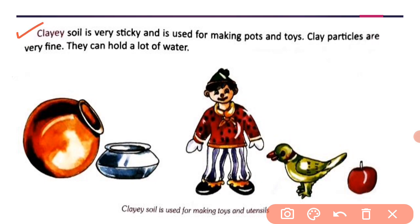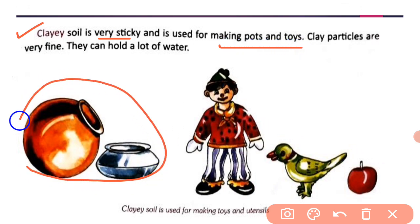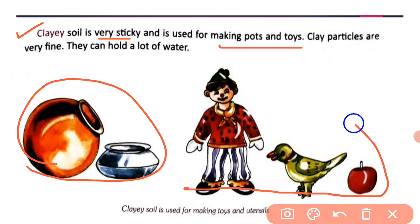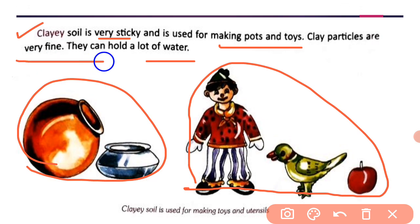Next is clay soil. Clay soil is very sticky and is used for making pots and toys. Clay soil bhat sticky hoti hain, bhat chikni hoti hain, aur iska use pots, toys, and utensils banane ke liye kiya jata hai. Clay particles are very fine and they can hold a lot of water.